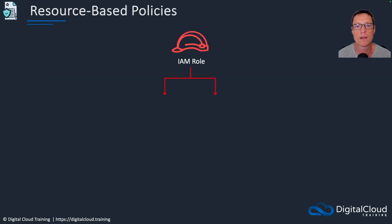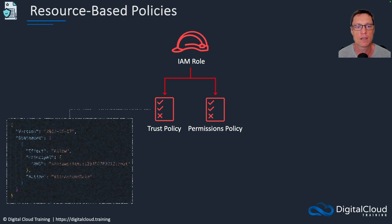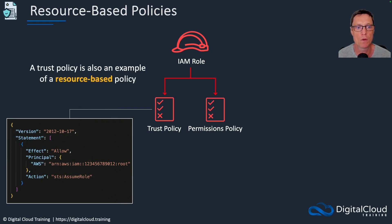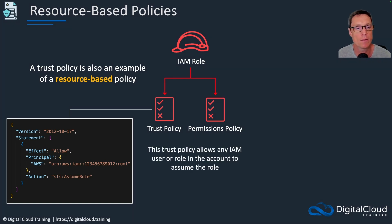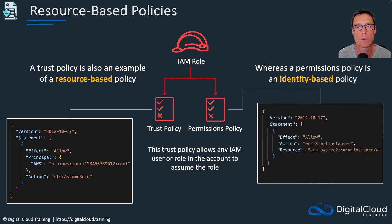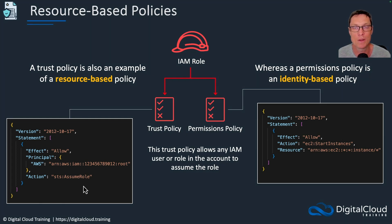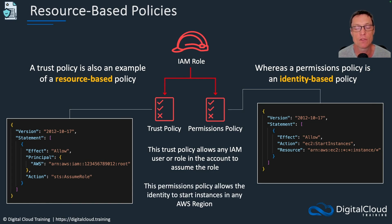Another example of a resource-based policy is the IAM role trust policy. With roles, we have to define a trust policy that defines who is allowed to assume the role — that's a resource-based policy. In this case, the trust policy allows any IAM user or role in the account to assume the role. Then we have a permissions policy — an identity-based policy — that defines what API calls the entity that assumed the role is able to perform. This particular permissions policy allows the identity to start instances in any AWS region.